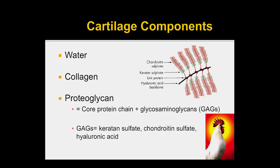Cartilage is very complicated. There are many components to it — I put a picture of a rooster here because hyaluronic acid comes from the comb of a rooster. It's made up of water, collagen, and proteoglycan molecules, which have a very important role in the distensibility and tensile strength that cartilage has.